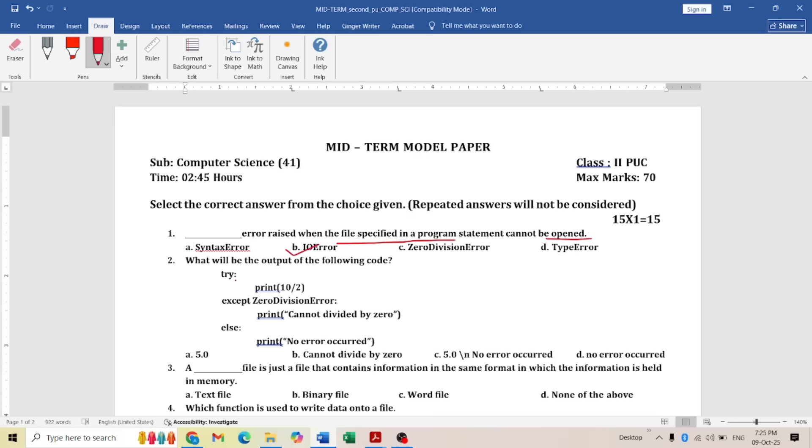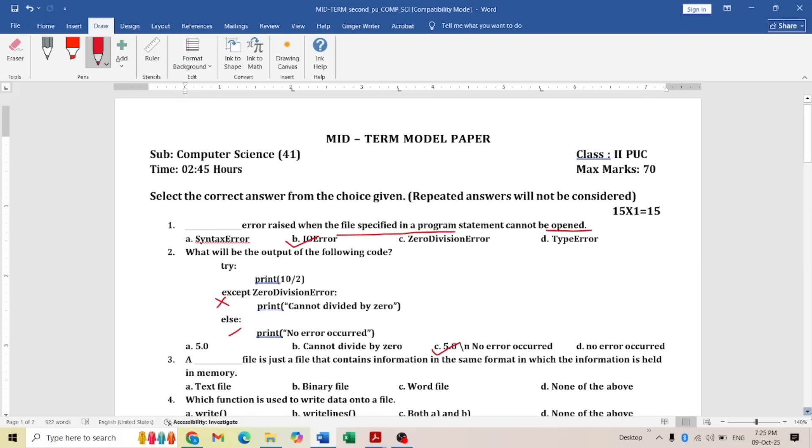The second question: what will be the output of the following code? Try—I'm printing 10 by 2. You will get the answer as 5.0, and the except block will not work because the try block is correct, and the else block will work, right? So print 'no error occurred.' The answer is C: 5.0 slash n, which means it will come to the next line, no error occurred.